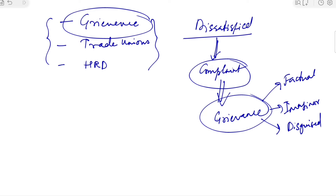What are the effects of grievances? On production, grievances can result in low quality, low productivity, increase in material wastage, and increased cost of production. For employees, it could lead to increased absenteeism or turnover — people might resign or go on long leave — reducing commitment, sincerity, and punctuality, increasing accidents, and affecting morale and motivation. On managers, it strains the superior-subordinate relationship and can increase the degree of supervision, control, and disciplinary actions.